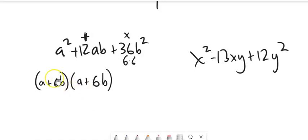So a plus 6b, a plus 6b. Since it's something times itself, I can leave it like this, or I could also write it as a plus 6b squared.